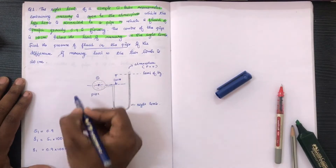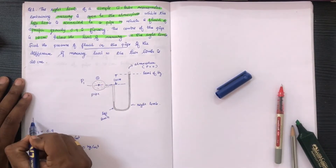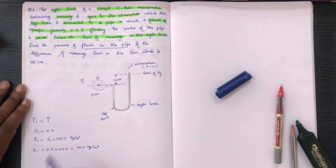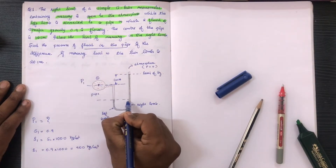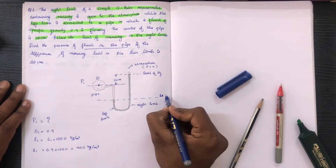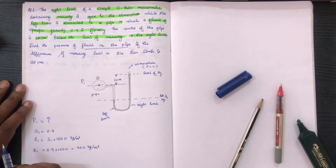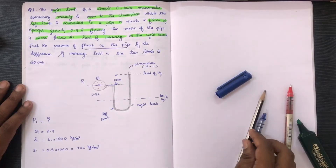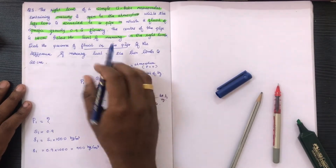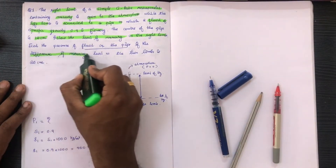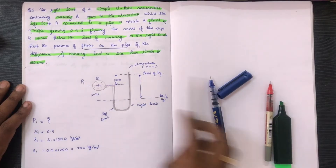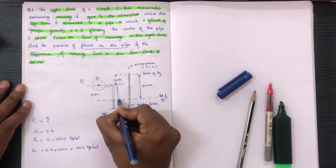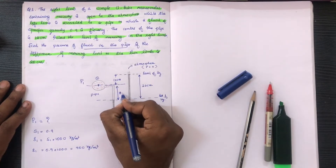We have to find P1. If the difference of mercury level in the two limbs is 20 cm, and the right limb is below the left limb — this is the level of mercury in the left limb. This distance is 20 cm. If 20 cm minus 12 cm, that is 8 cm.